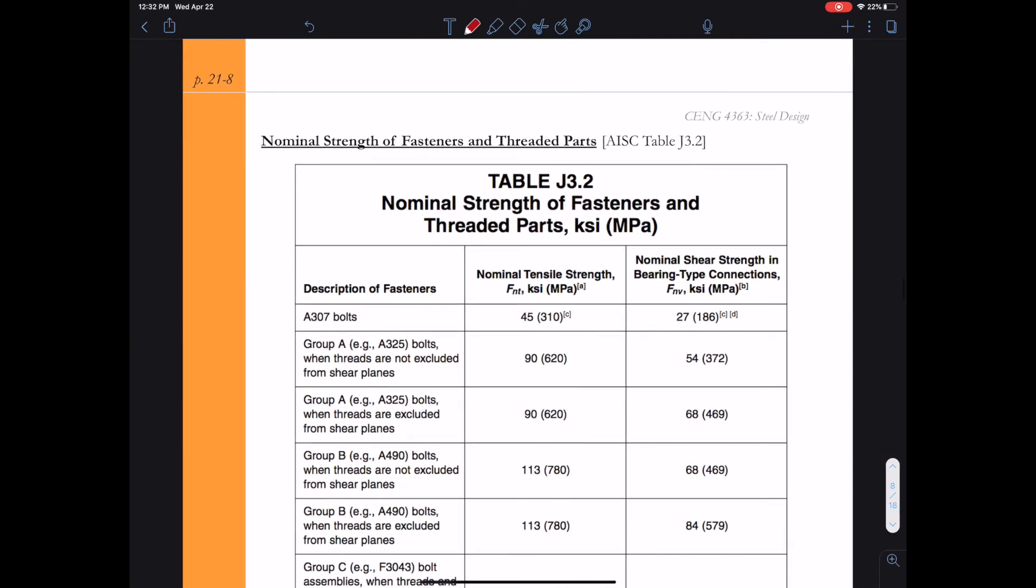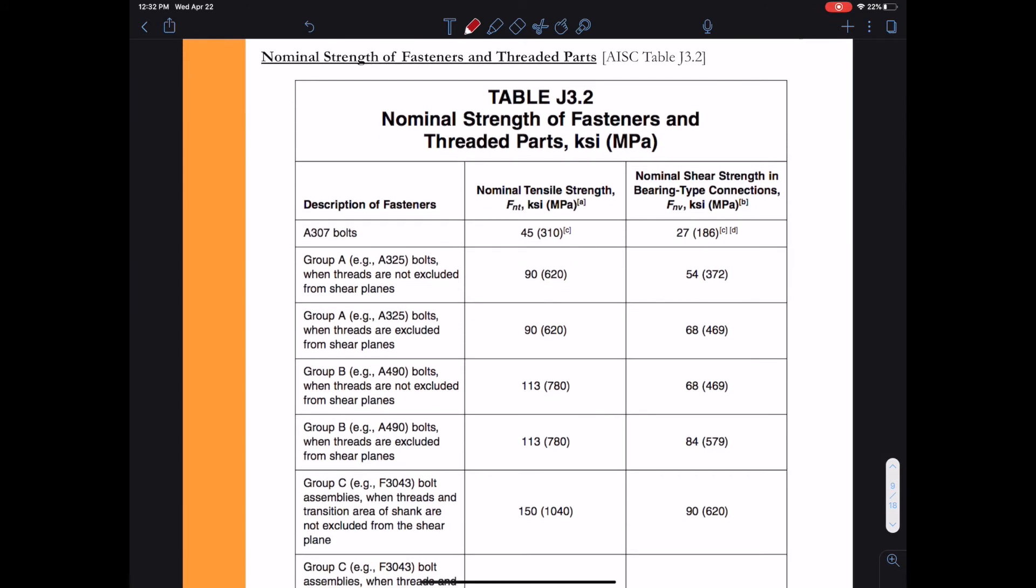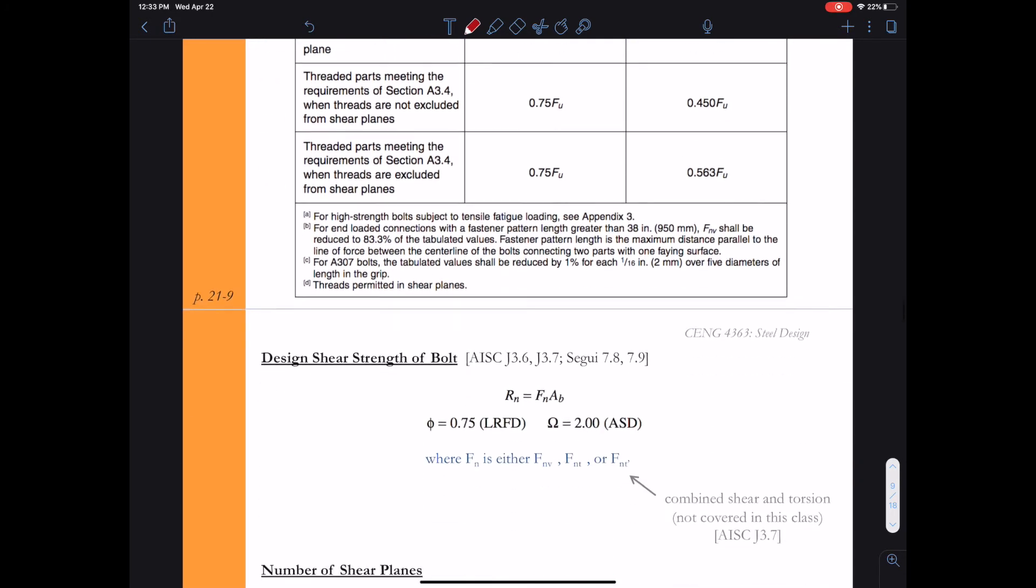Now let's take a look at Table J3.2 in our manuals. If I was you, I would go ahead and write in my manual this connection type N and connection type X. So we can read there for group A, for example, A325 bolts. When threads are not excluded from shear planes—you can see I'm already getting confused. When the threads are not excluded from the shear planes, then they're included, so that's connection type N. When the threads are excluded from the shear plane, that's connection type X. I would just go ahead and write these in the manual. Otherwise, you're going to get confused on the tricky wording that they've used there. I think it's a little tricky. But I write this in my manual so that there's no questions.